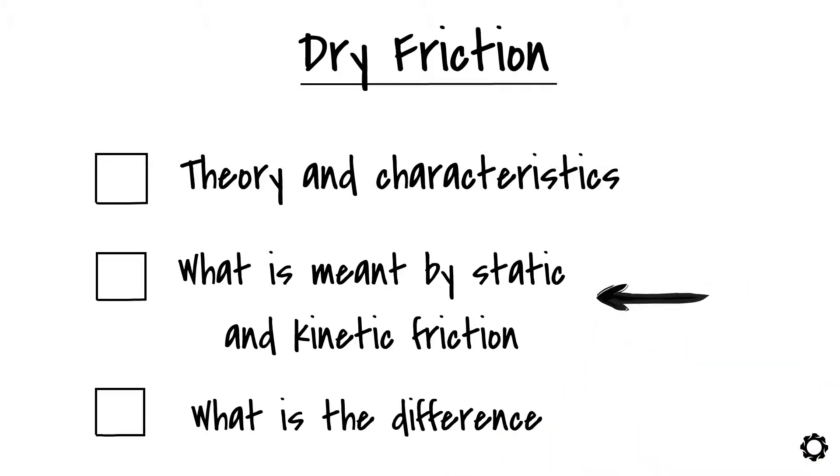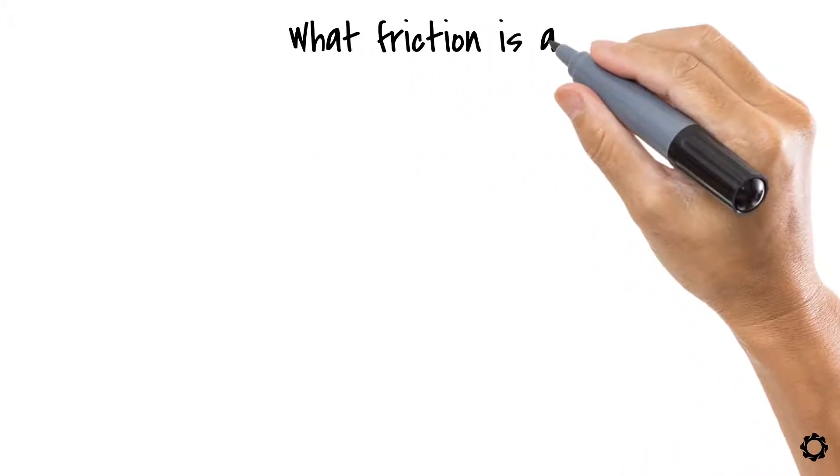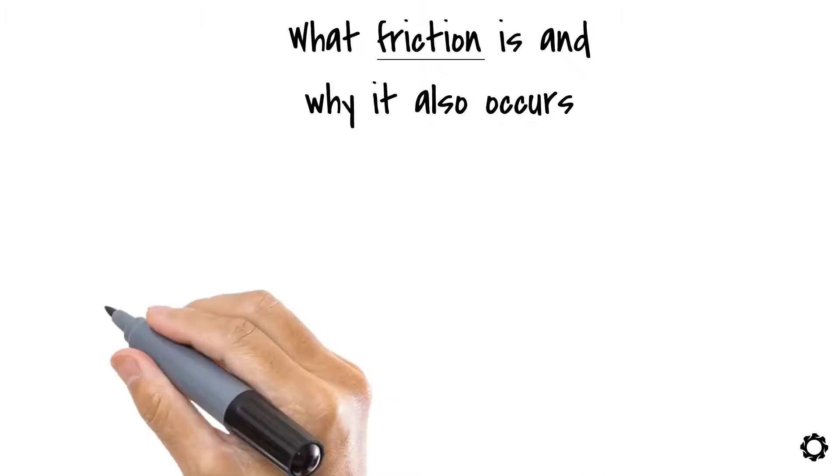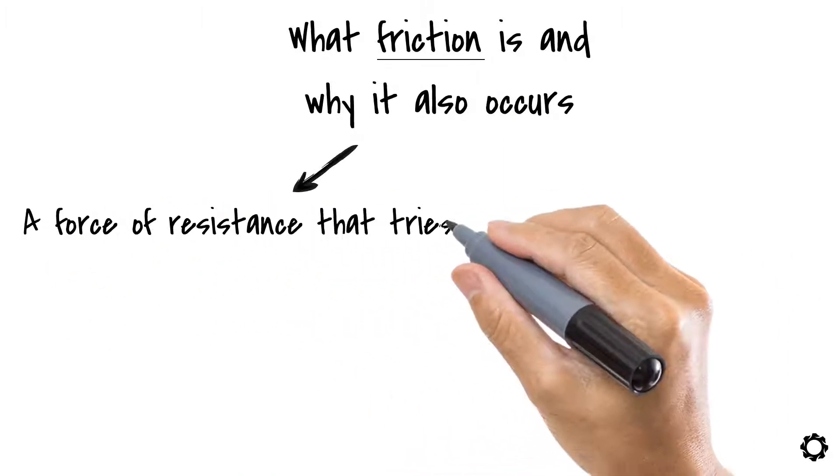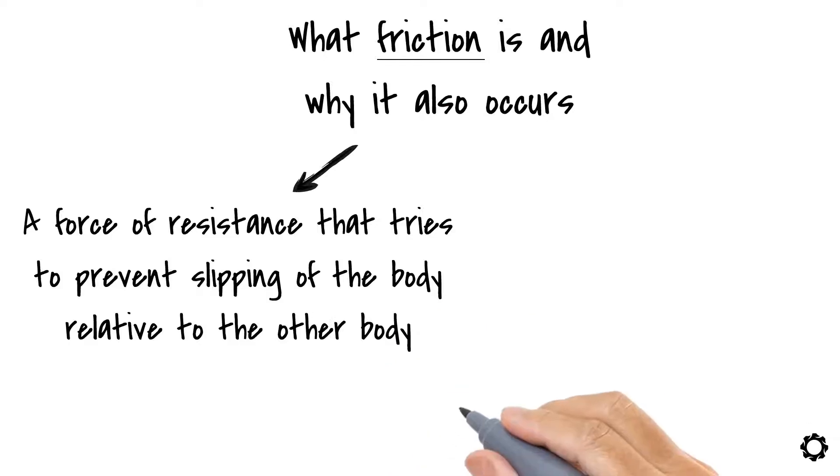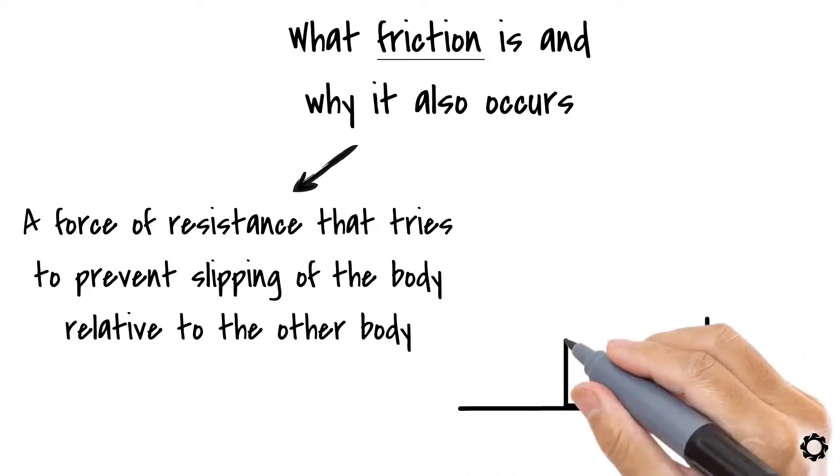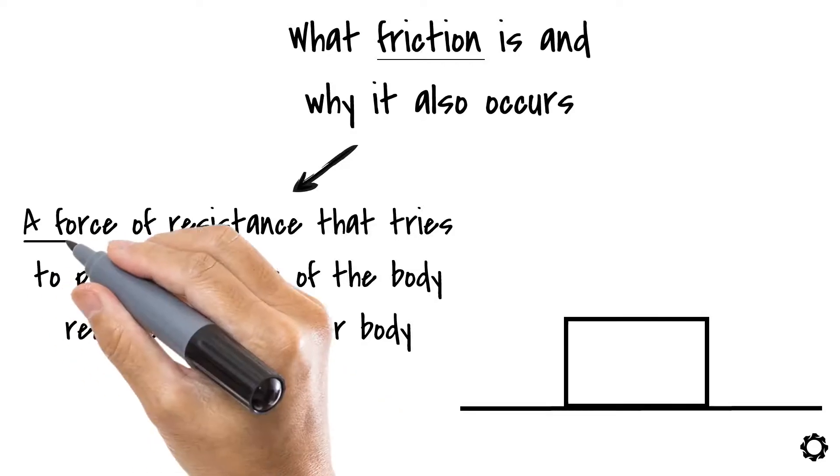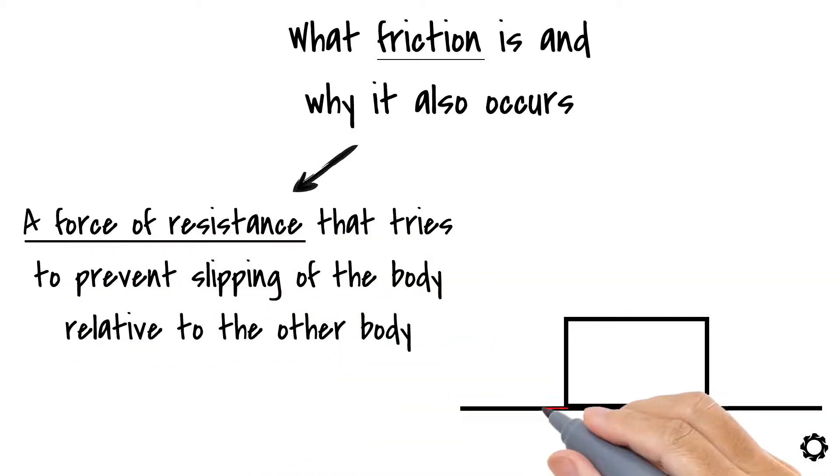Firstly, we must understand what friction is and why it also occurs. We can define friction as being a force of resistance that tries to prevent slipping of the body relative to the other body, or to the surface with which it is in contact with. Therefore, we can determine that this resistance force acts as a tangential force between the contact surfaces of the bodies against the possible direction of motion.